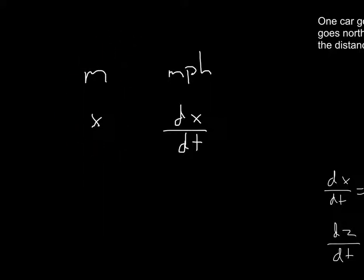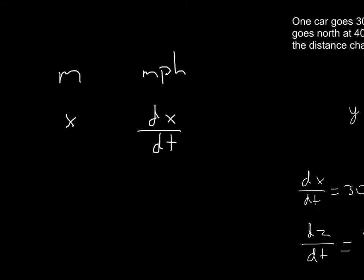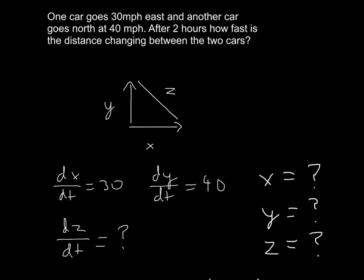But we can put it here because X can stand for miles. So X is equal to miles. dx/dt is the units over time, whatever that may be. It can be miles, it can be kilometers per hour, as long as it's a unit over time. Now, going back to the problem, we have dx/dt is 30, dy/dt is 40.